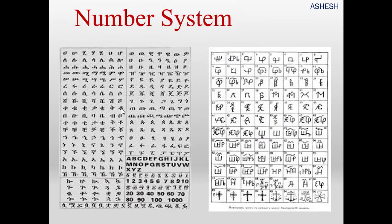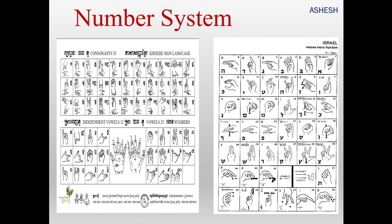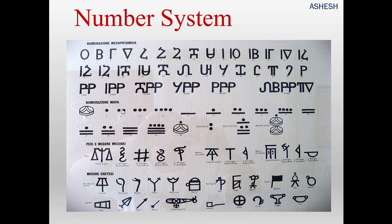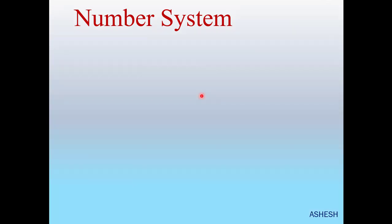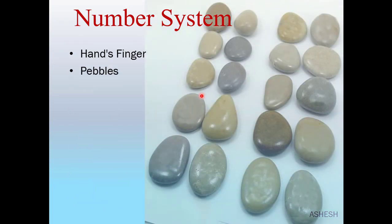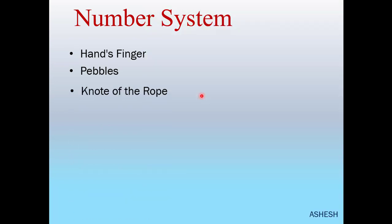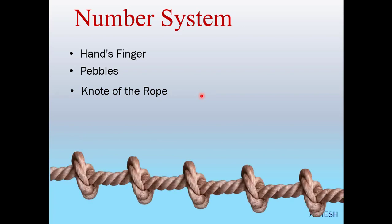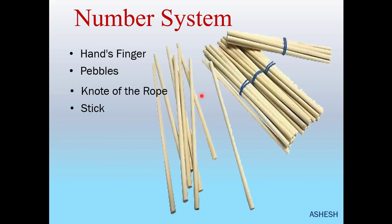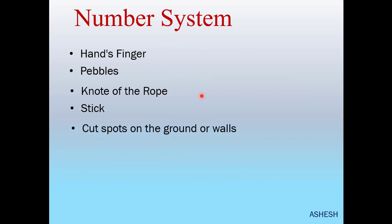Here we see some ancient symbols in the pictures. We see some hands showing symbols. Ancient people counted their numbers using hand fingers, and also used knots of rope, sticks, or cut marks on the ground or wall.